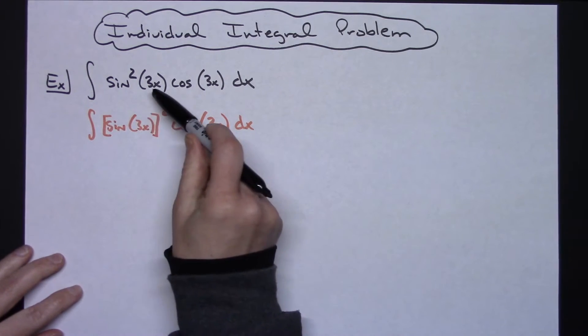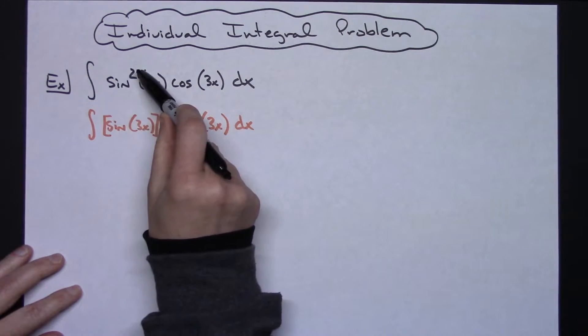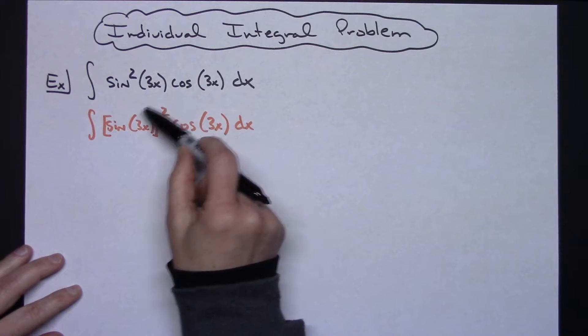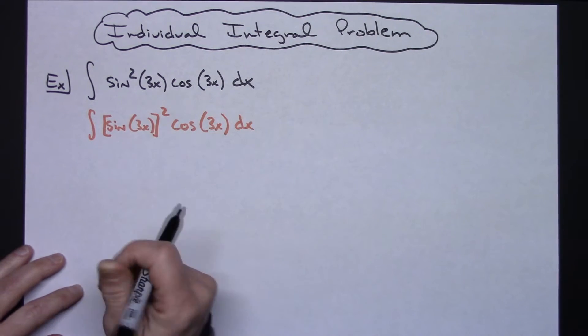My suggestion here would be if you see things written like this, just rewrite it so that you can see what's actually being squared, where the inside is, where the outside is.